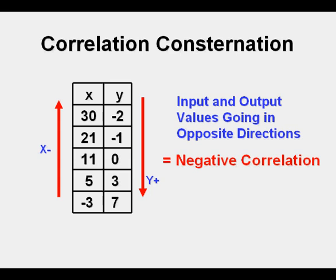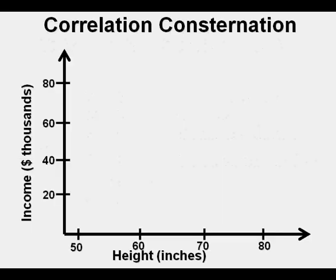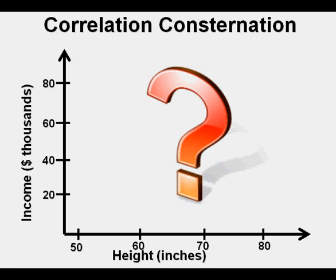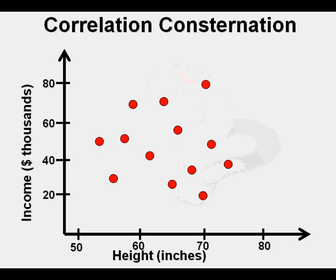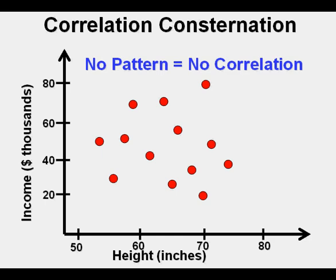We've covered what positive and negative correlation look like. What about the relationship between a person's height and income? What would you expect a scatter plot of this relationship to look like — positive or negative? Here is the scatter plot of a sampling of persons relating height and annual income. Since there is no clearly discernible pattern, we say this relationship exhibits no correlation, which is what we'd expect because pay scales are not based on a person's height.